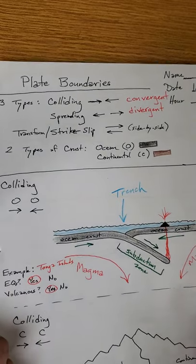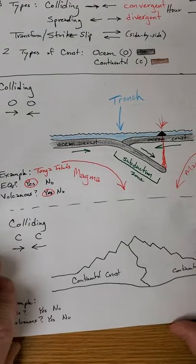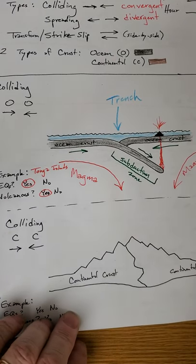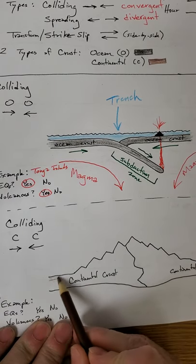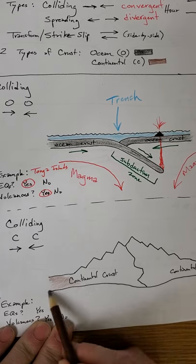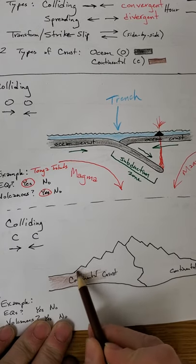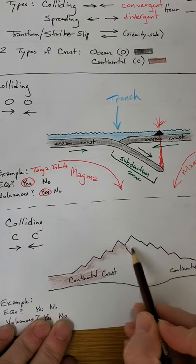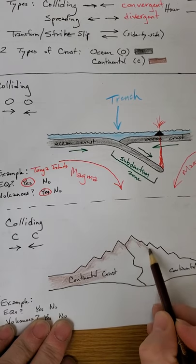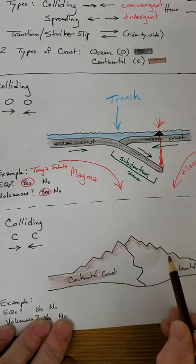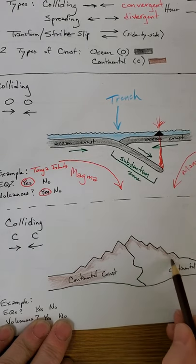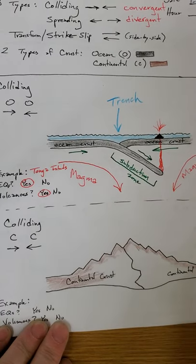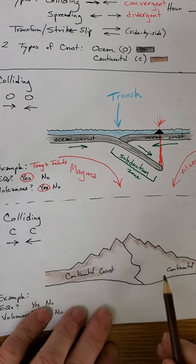Now, we're going to do another colliding boundary. This time, we're going to run two chunks of continent into each other. For this one, grab your brown. Continental crust is brown. I'm just doing this in a hurry. Two chunks of continent have slammed into each other. And look at the crumple marks. But look at how much different this drawing is than the one up above. They acted completely differently.